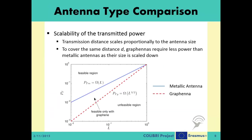Another notable advantage of graphennas over metallic antennas is the fact that, to have an electromagnetic wave covering the same distance, graphennas require less power than metallic antennas as their size is scaled down. As you can see from the figure, the transmitted power requirement of graphennas is one order lower than that of metallic antennas for an antenna with a size of 1 cm.